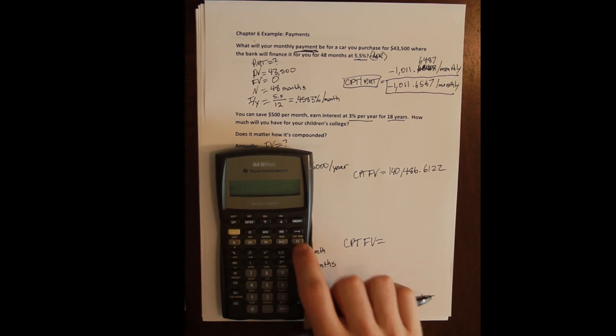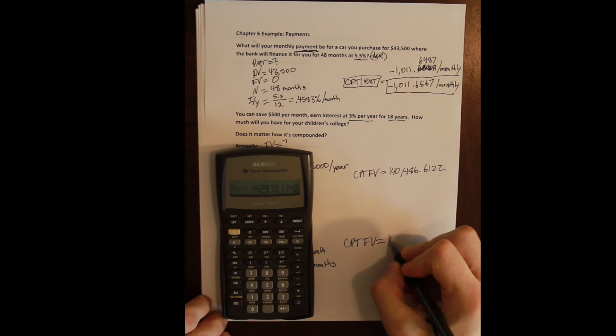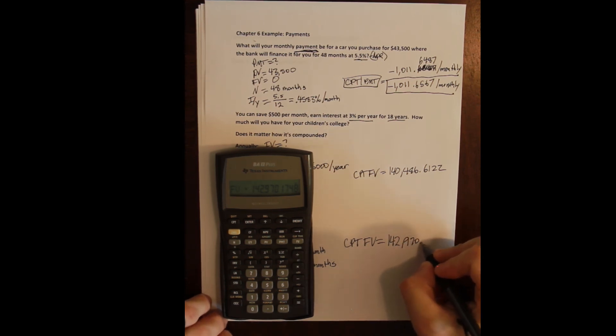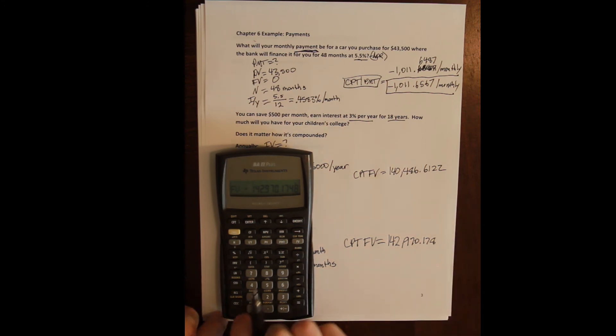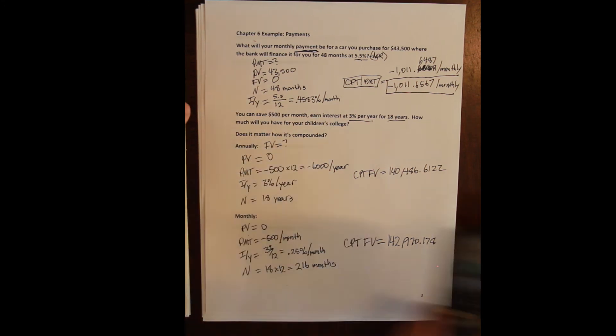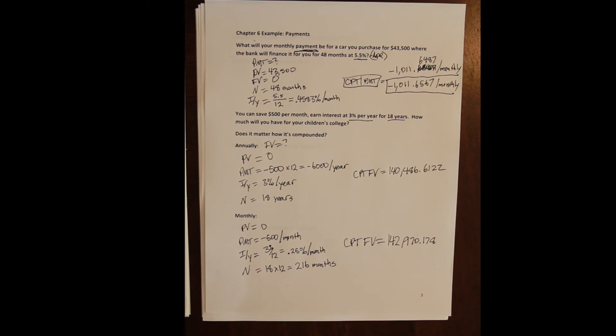Compute our future value and we get that we would instead have a hundred and forty-two thousand, nine hundred and seventy dollars in the account. So we'd have about three thousand dollars more if we got monthly compounding instead of annual compounding. And that might not seem like much in the context of this, but remember that the majority of the work being done here is on time—in the 18 years you're just getting that much compounding going on.